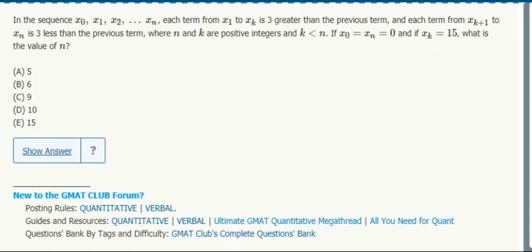Each term from x₁ to xₖ is 3 greater than the previous. I know x₀ equals 0, xₖ, which is somewhere in the middle, is 15, and then xₙ, the final one, is equal to 0.